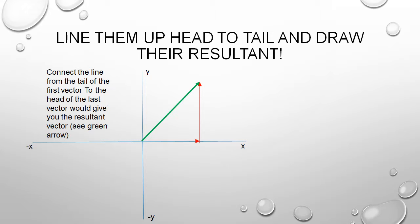Then we could draw a line from the origin to where the head of the last added vector is. That would be your resultant vector. If you can see from the screen right now, the green arrow represents the resultant vector of the two vectors that we just added together.